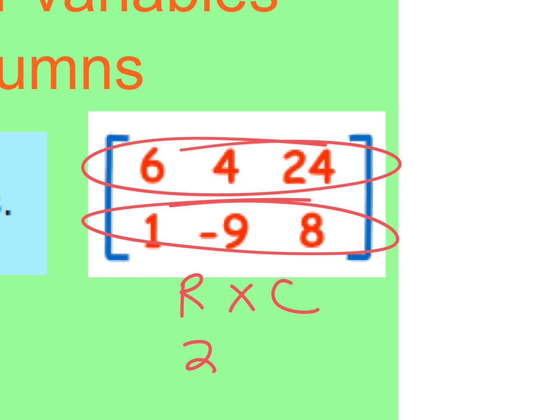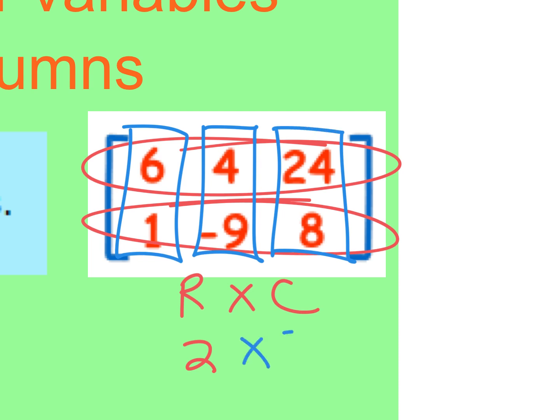This thing has two rows. And then columns are like what holds up buildings, right? So that is a column and there are three columns. So this is a 2 by 3 matrix. That's one of the first things you've got to know—how to describe them in terms of rows and columns.